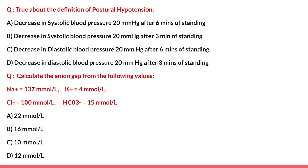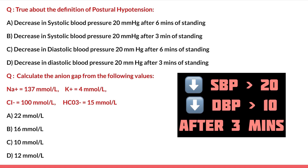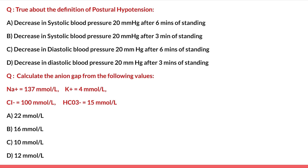Next question: what is true about the definition of postural hypotension? Options are: decrease in SBP 20 mmHg after 6 minutes of standing; decrease in SBP 20 mmHg after 3 minutes of standing; decrease in DBP 20 mmHg after 6 minutes; or decrease in DBP 20 mmHg after 3 minutes. The definition states a fall in SBP >20 mmHg and DBP >10 mmHg after three minutes of standing. Options with six minutes are automatically ruled out. Among the remaining options, DBP should be 10 mmHg and SBP 20 mmHg — so the right answer is option B: decrease in systolic blood pressure more than 20 mmHg after three minutes of standing.